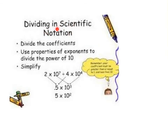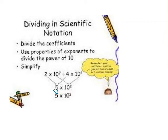Dividing numbers in scientific notation is very similar. You divide the coefficients out front, then use the properties of exponents to subtract your exponents. For example, 2 divided by 4 is 0.5, and 7 minus 4 is 3 — giving 0.5 times 10 to the 3rd. Since 0.5 is less than 1, it must be converted — moving the decimal one place gives 5, and since the number got bigger, the exponent goes down by 1.